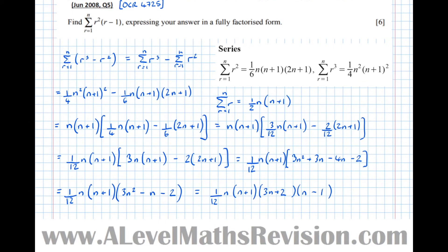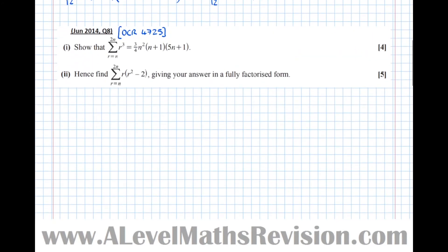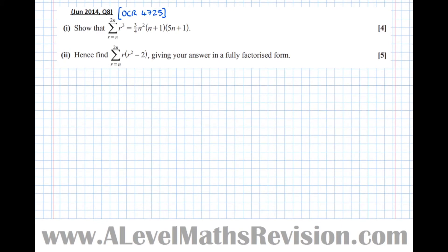That's a relatively straightforward example, and now I want to look at an example that's not as straightforward. It says show that the sum there equals three quarters n squared times n plus 1 times 5n plus 1. The twist here is that the limits are now from n to 2n, not 1 to n. So for part 1, what we're going to have to do first is find the sum of the first 2n terms, then take away the first n minus 1 terms.